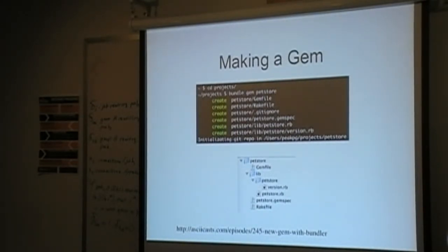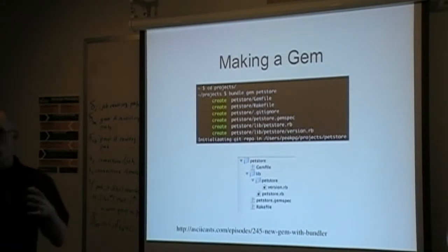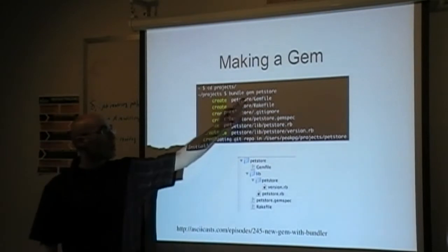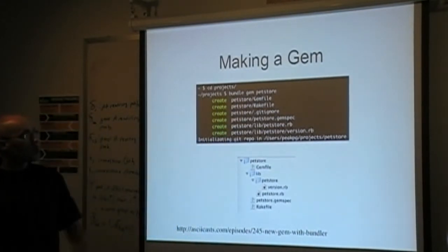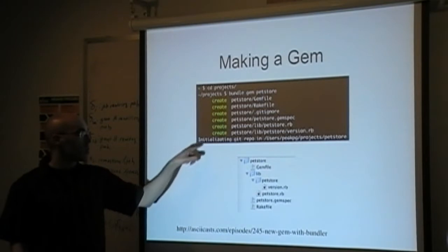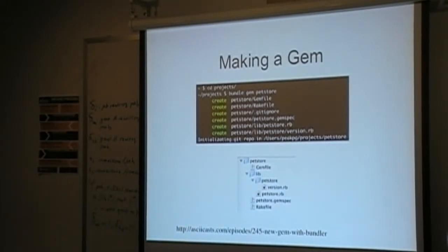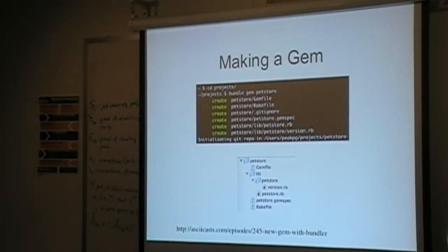We'll talk about making a gem that contains a command line tool using Thor. With Bundler there's a pretty easy way to build a new gem: you run 'bundle gem pet_store,' it generates a bunch of files, creates a Git repo, and sets up a directory structure. There was an article about best practices: your Gemfile is nothing more than a pointer to your gem spec, so in this case you just say 'gemspec.' Importantly, it specifies the executables that are part of this project — it looks like it's using Git to find every file in the executable directory.